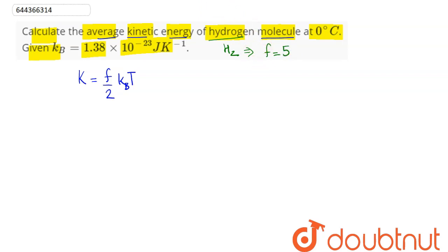So substituting the value of f as 5, we can say this comes as 5 by 2 into kb into T. So here Boltzmann constant value is given as 1.38 into 10 power minus 23 into temperature here is 273 kelvin.